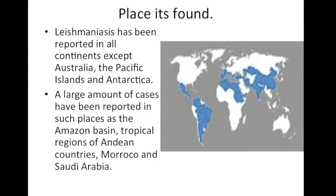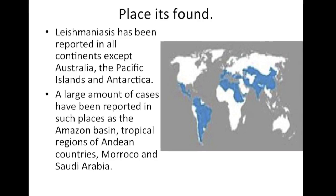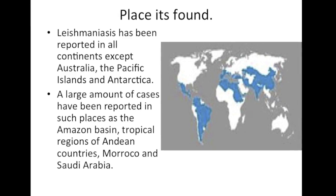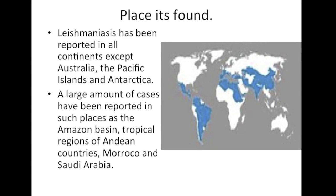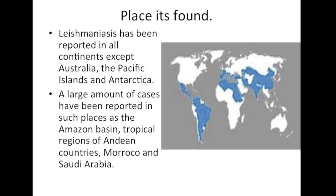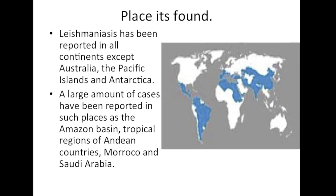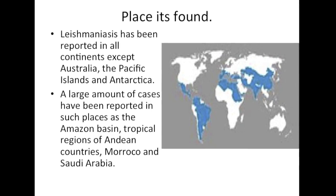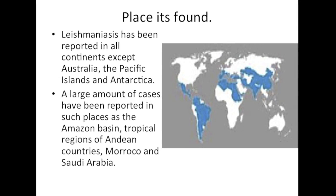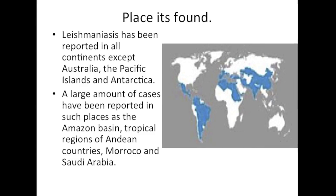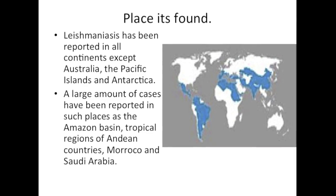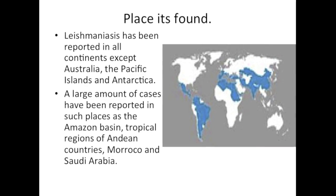Places It's Found: Leishmaniasis has been reported in all continents except Australia, the Pacific Islands and Antarctica. A large number of cases have been reported in places such as the Amazon Basin, the tropical ridges of the Andean countries, Morocco and Saudi Arabia.